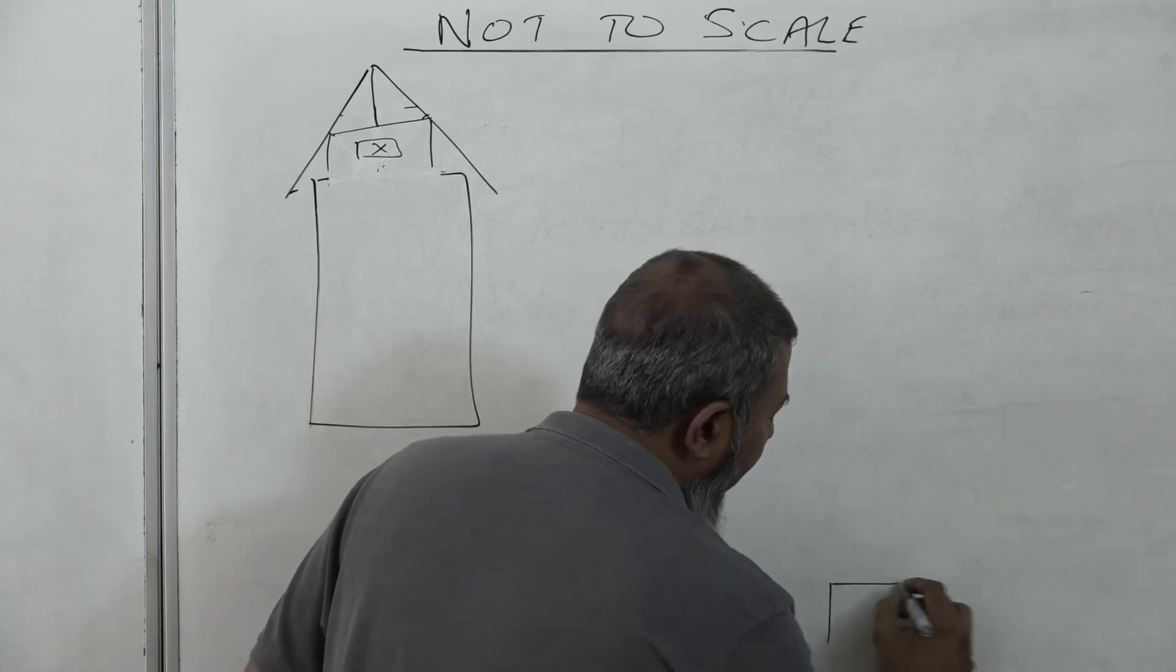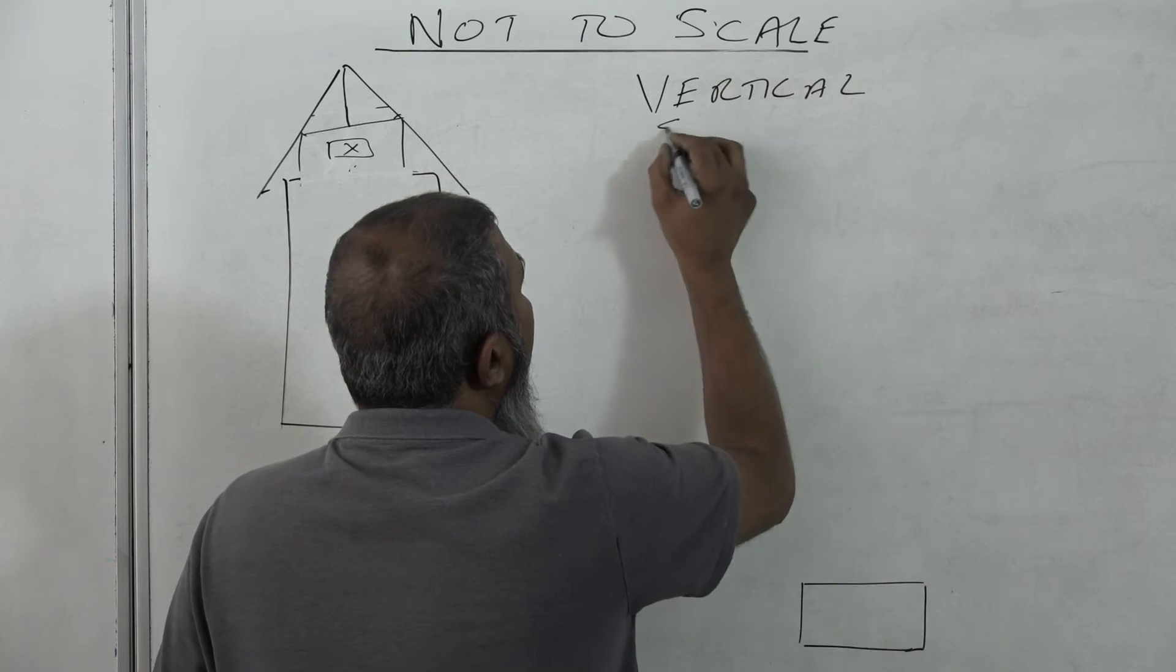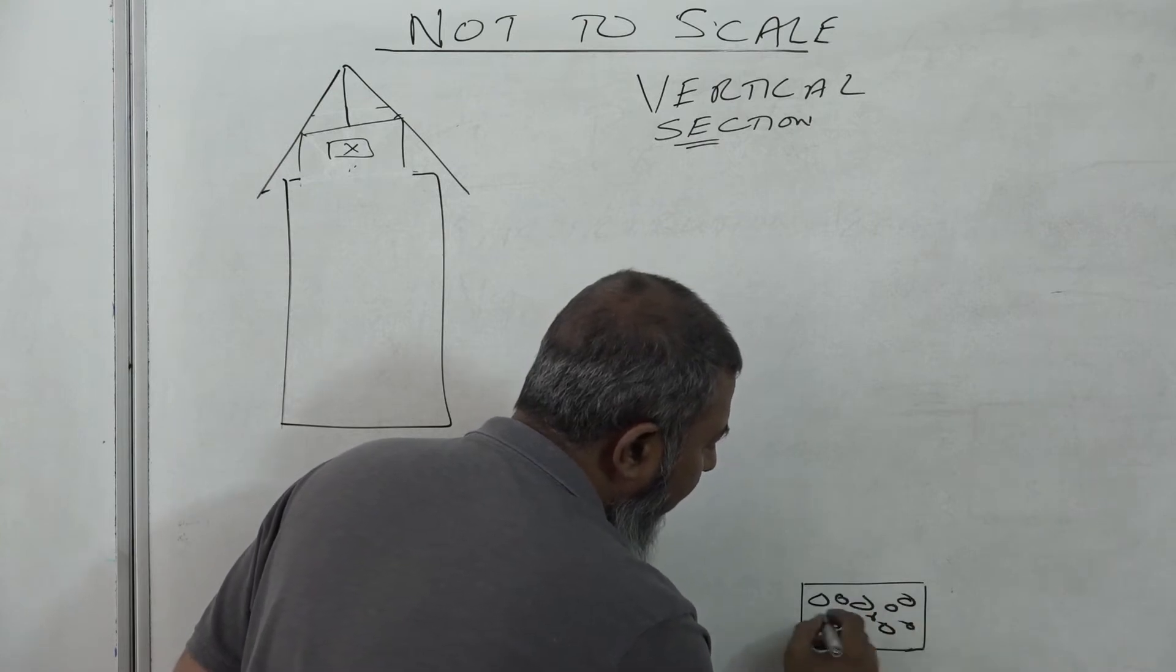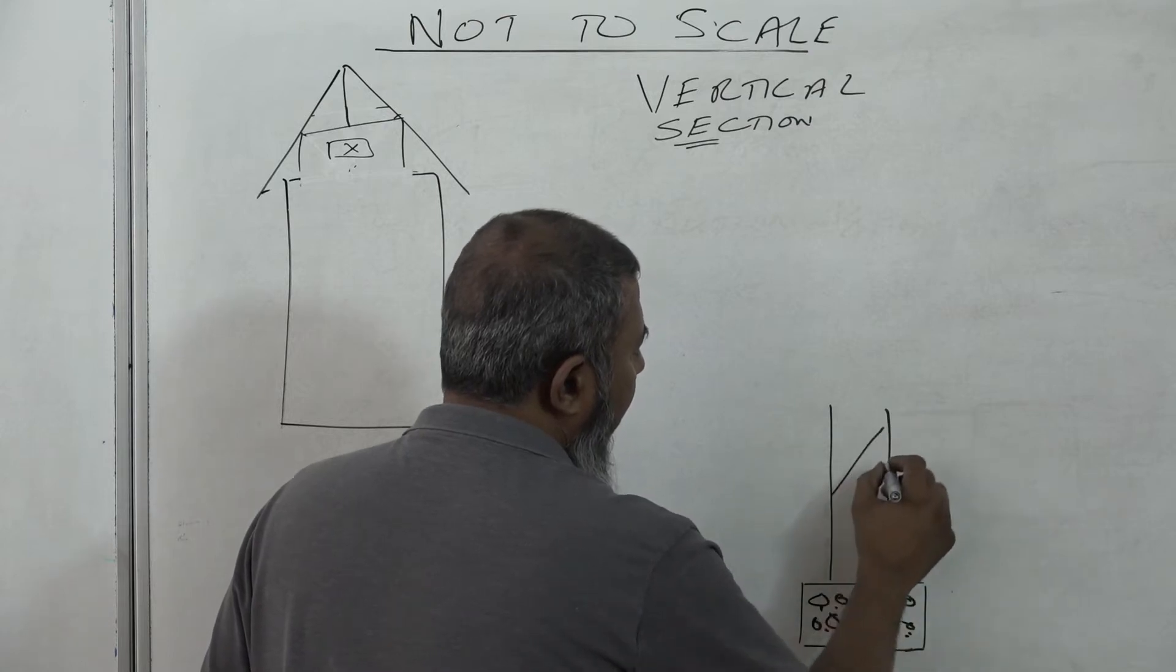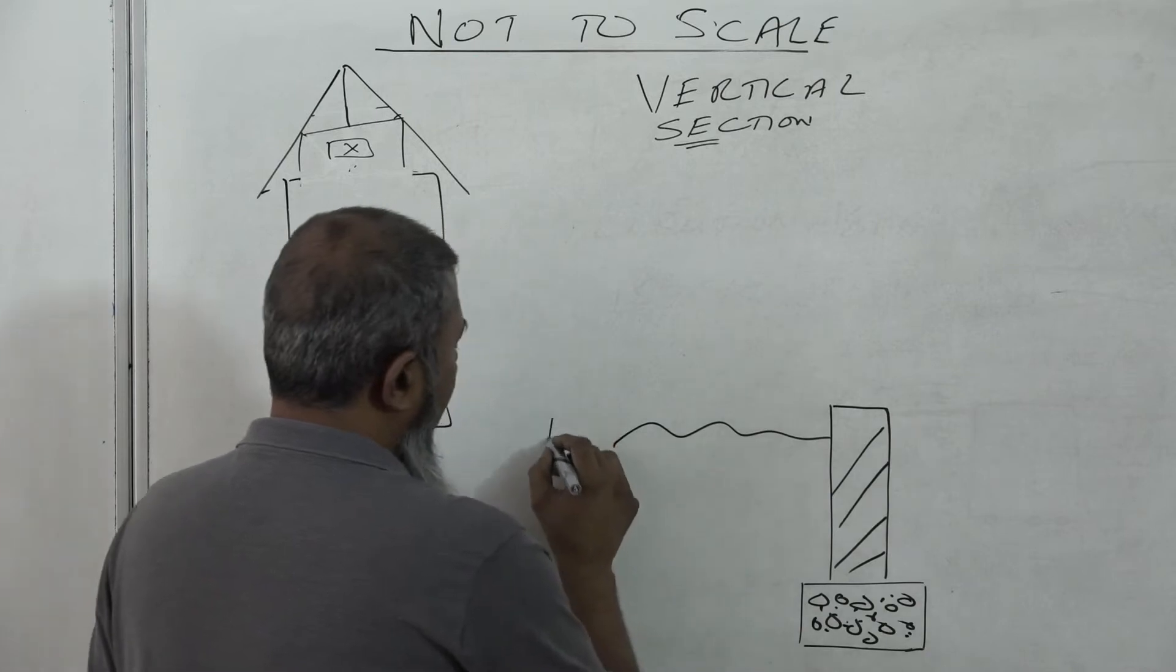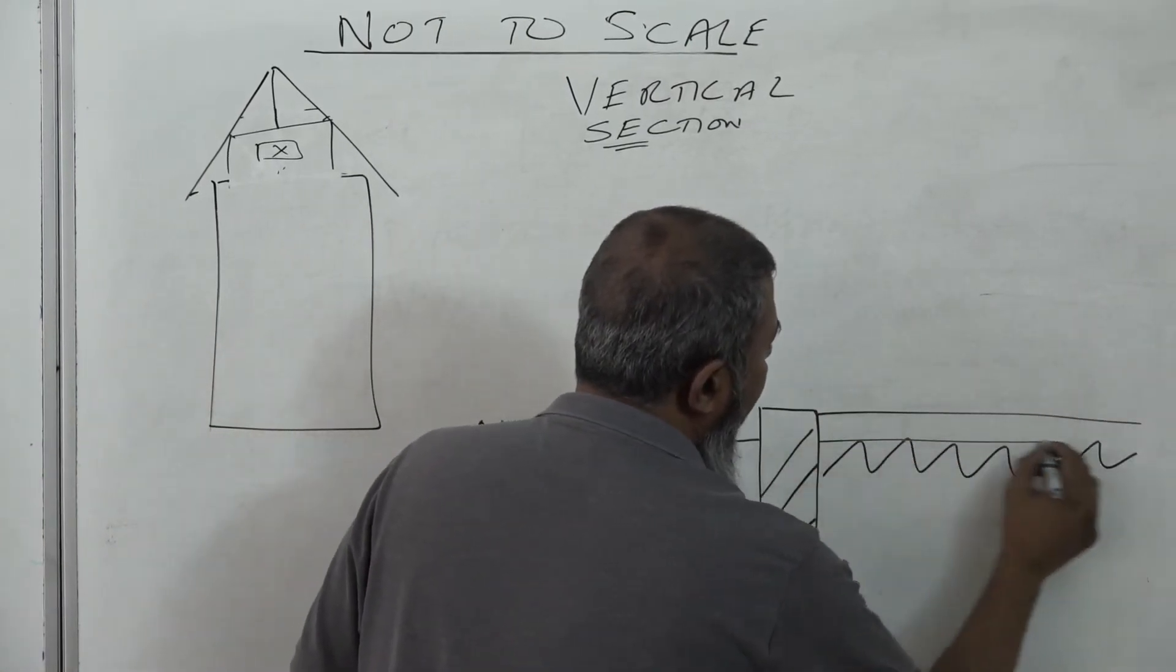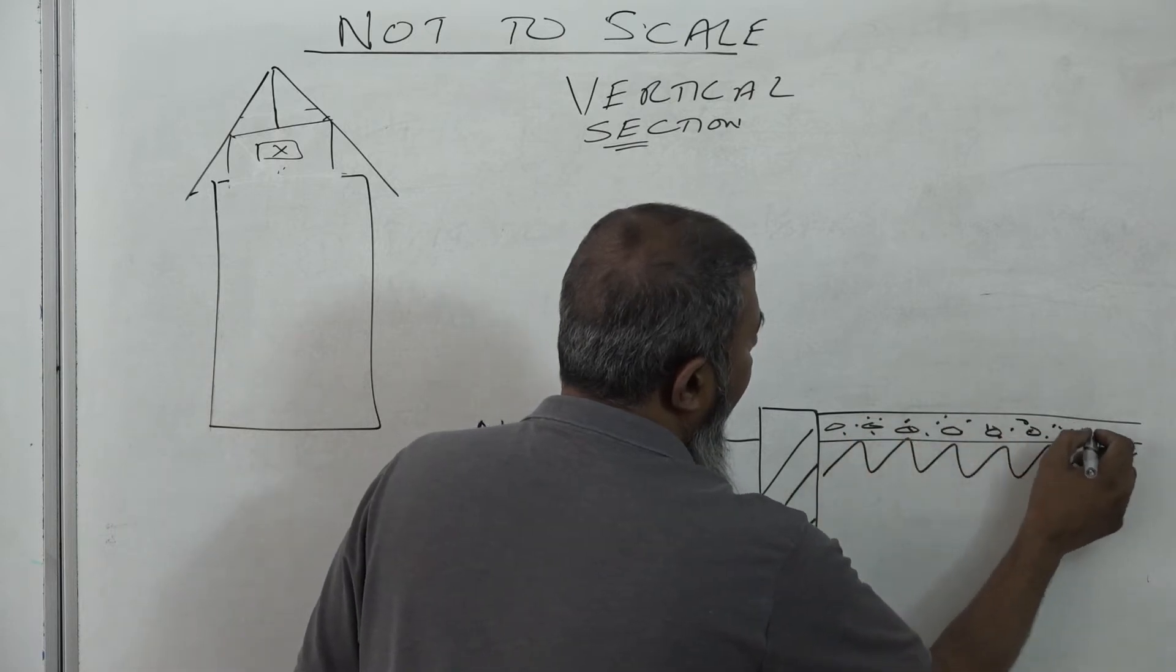So vertical section of a suspended wooden floor looks as follows. We're going to do a vertical section. First of all, we start with our foundation and our foundation is made out of concrete. We have a foundation wall going up. That's my foundation wall.